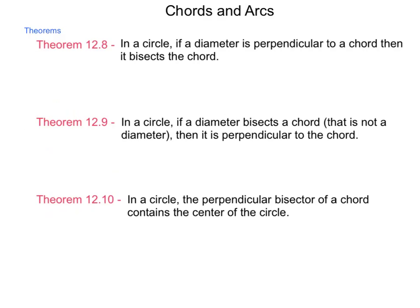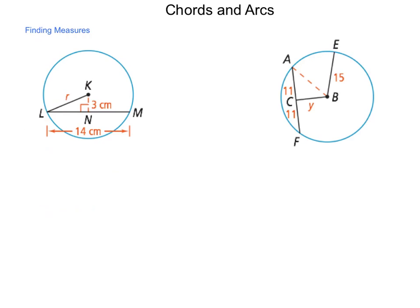So what can we do with all these theorems now? We're going to be developing them in future lessons, but let's take a brief look at a little application here. So we're going to find measures for the missing variables based on all these theorems of chords. In our first diagram, we have chord LM and a partial line segment here, KN, with a radius r going along the length of KL. And we need to find that length of r.